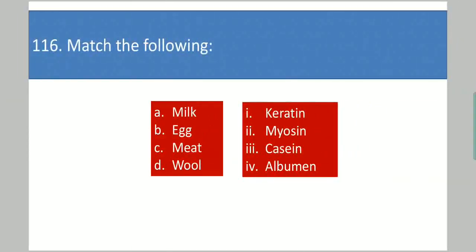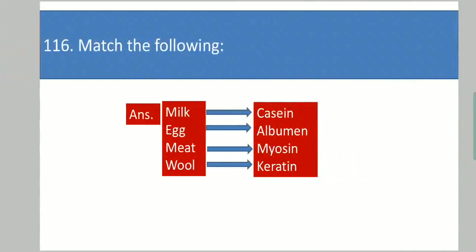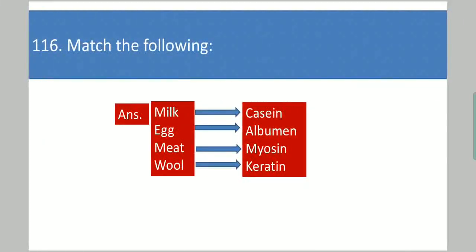Next question: Match the following. Column 1: milk, egg, meat, wool. Column 2: keratin, myosin, casein, albumin. Your answer is: milk is related to casein, egg is related to albumin, meat is related to myosin, and wool is related to keratin.